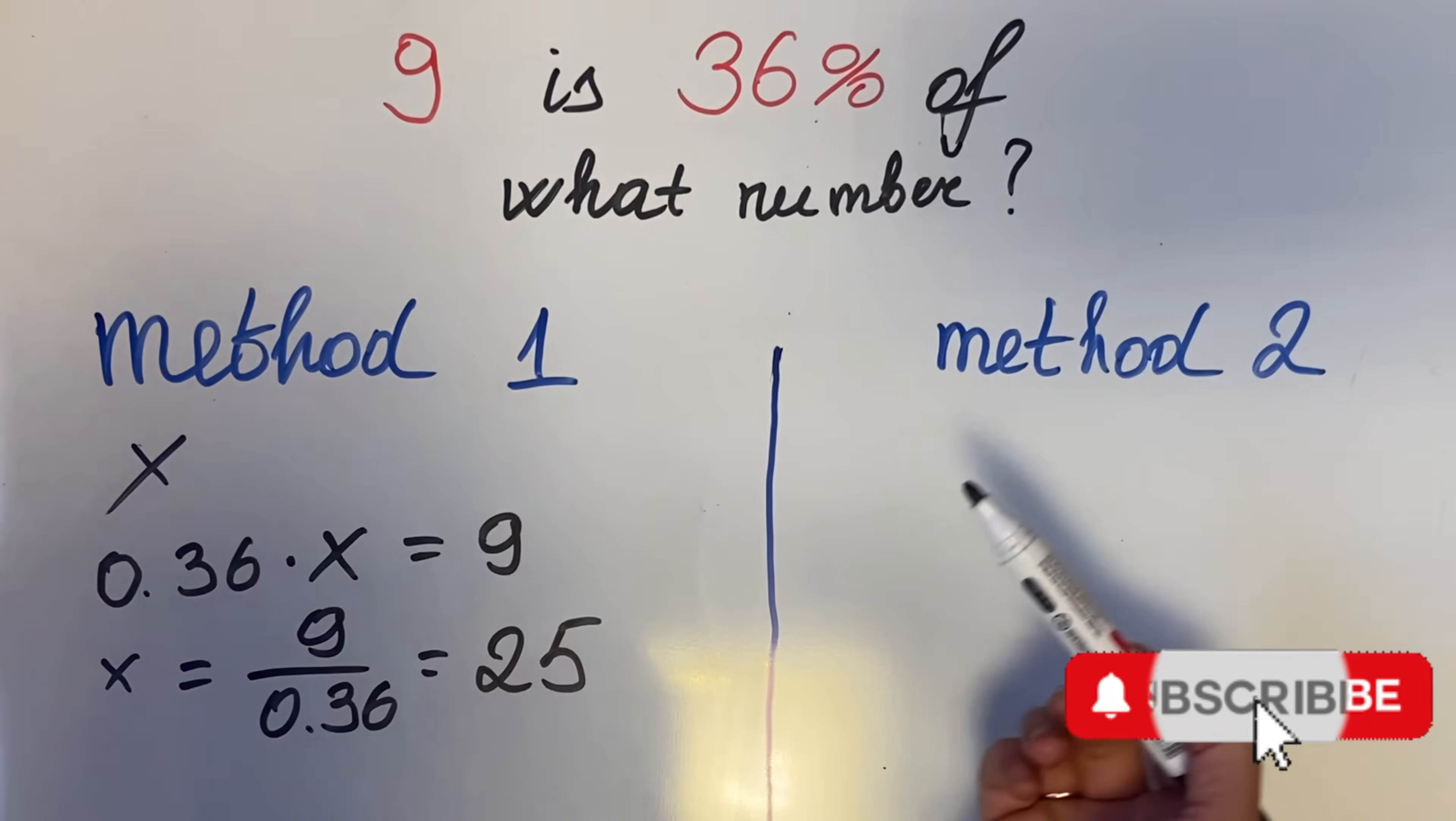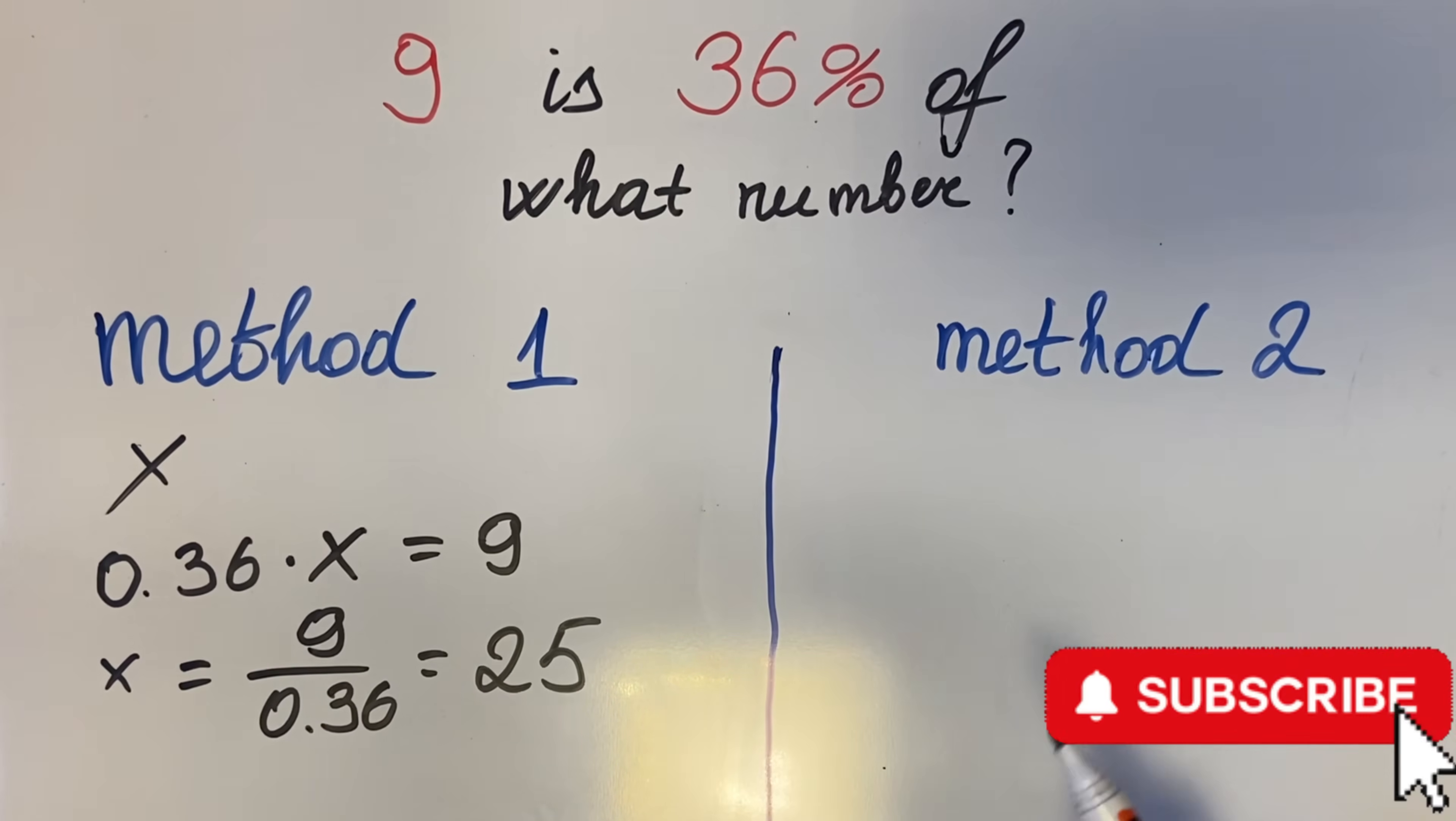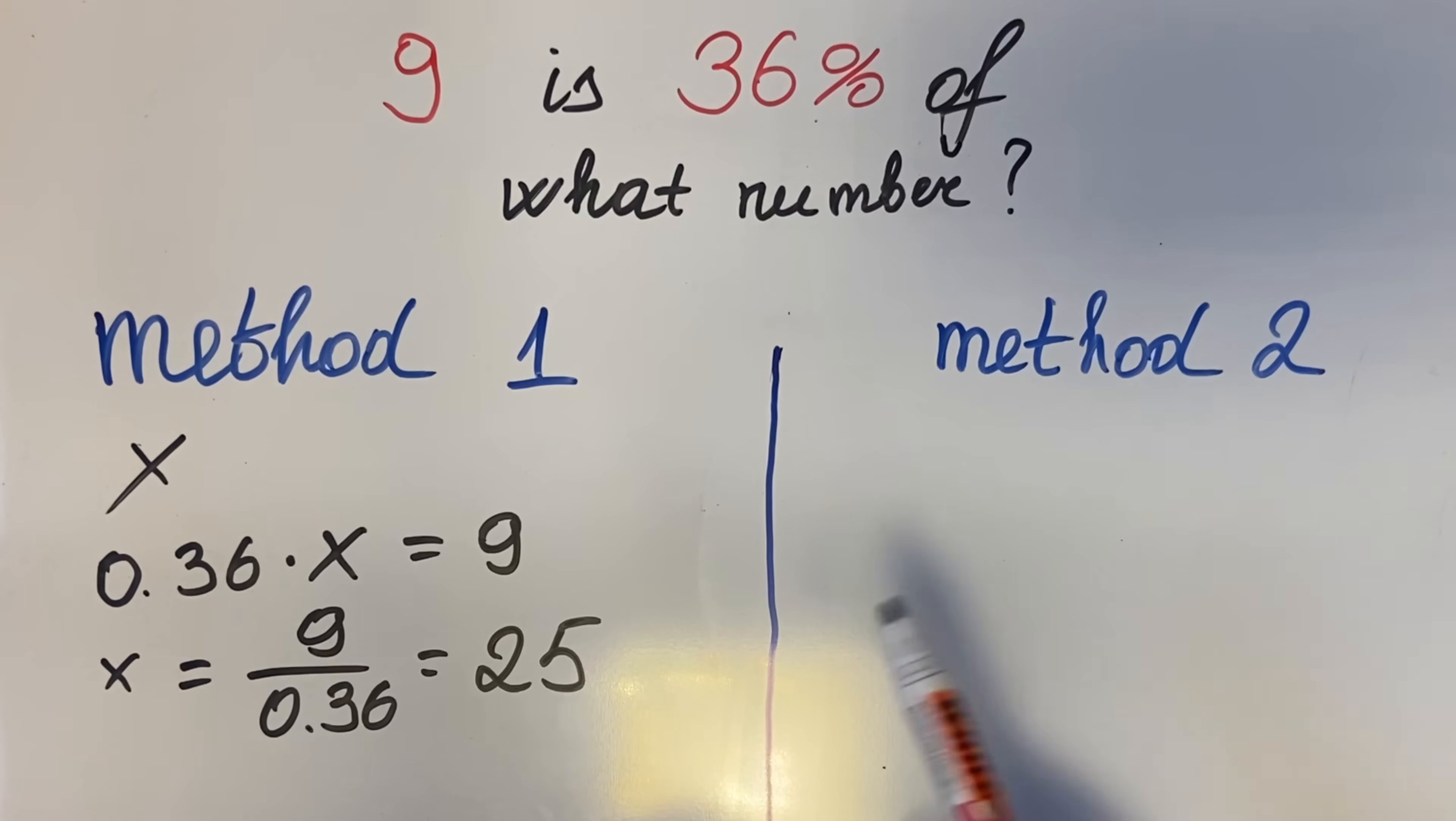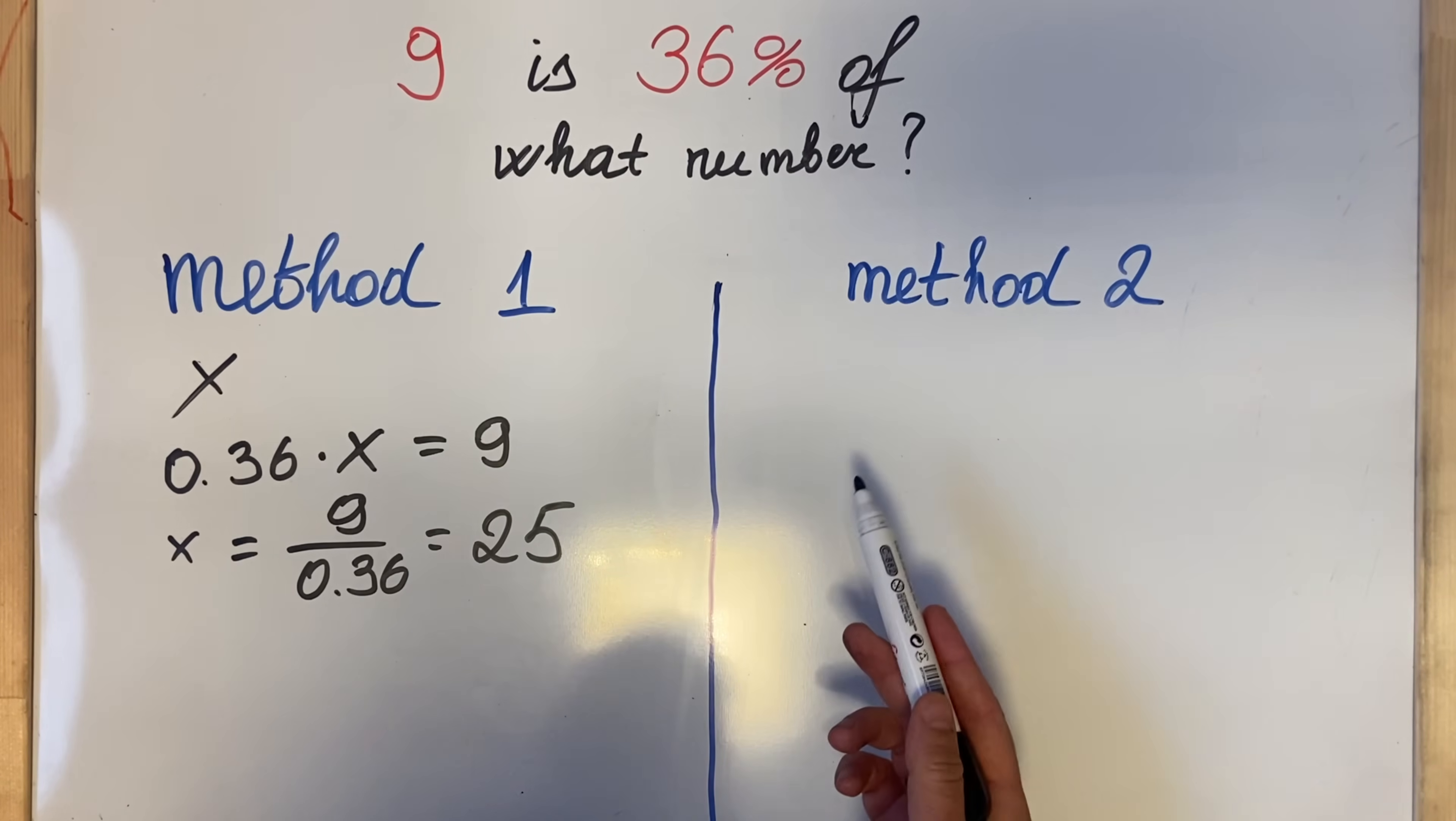But now let me show you another method which I think is faster and way easier. If you're at the market or at work and don't have a paper and pen to do all this stuff, the method I usually use is the proportion method. What does it mean? For example: